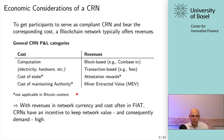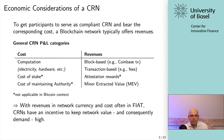What is important to understand right away is that with revenues in the network currency — in Bitcoin in the case of the Bitcoin network — and costs most often in fiat currencies, CRNs have an incentive to keep the network value and consequently the demand very high. In other words, they don't have an incentive to act in a way that hurts the network, because they get paid in the native protocol asset of that blockchain, while their costs are real-world costs paid in US dollars, euros, Swiss francs, and so on.